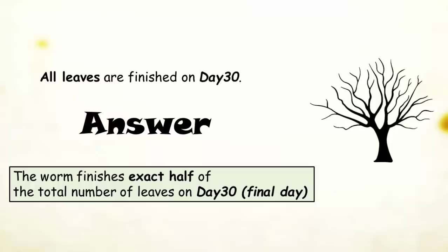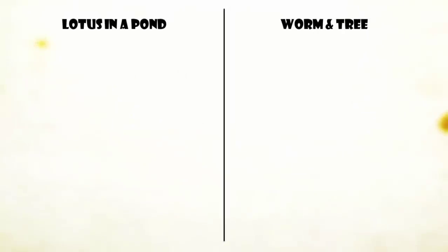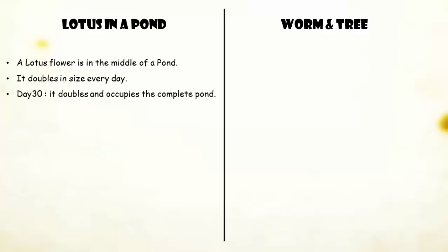Now, let's see how this riddle is different from the lotus in a pond riddle. In the lotus riddle, the lotus is in the middle of a pond and it doubles in size every day. On day 30, it doubles and occupies the complete pond.